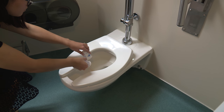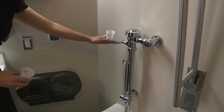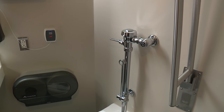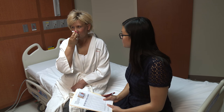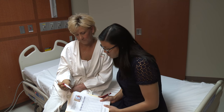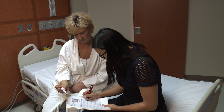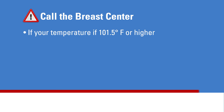After you have recorded the amount of fluid from each bulb on your volume of drainage chart, discard the fluid by flushing it down the toilet. In the evening, when you empty and measure your fluid drainage, take your body temperature and record it on the volume of drainage chart. If your body temperature is ever 101.5 degrees Fahrenheit or higher, call the breast center.